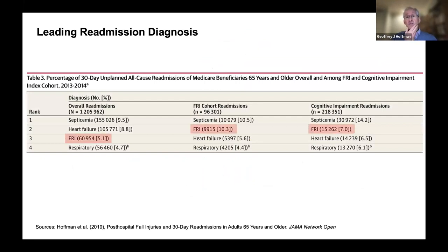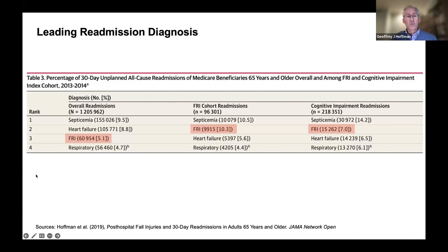Fall injuries are a leading readmission diagnosis — the third leading readmission diagnosis overall for all readmitted Medicare beneficiaries. For people with prior falls, they're the second leading diagnosis of a readmission. For those with cognitive impairment, they're also the second leading reason for readmission.